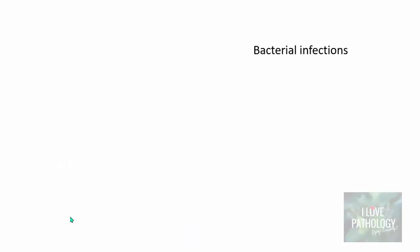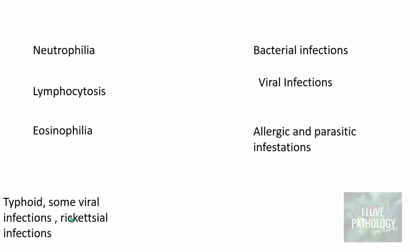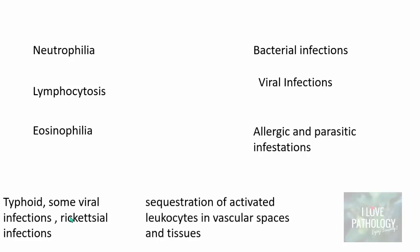Bacterial infections give rise to neutrophilia; viral infections cause lymphocytosis — an increase in the relative lymphocyte count. Eosinophilia is most commonly seen in allergic conditions and parasitic infestations. In some infections like typhoid, certain viral, rickettsial, and protozoal infections, there is sequestration of activated white blood cells in vascular spaces and tissues, resulting in decreased leukocyte count — manifesting as leukopenia. Both leukocytosis and leukopenia can be manifestations of the inflammatory process.